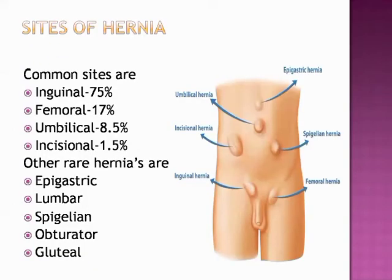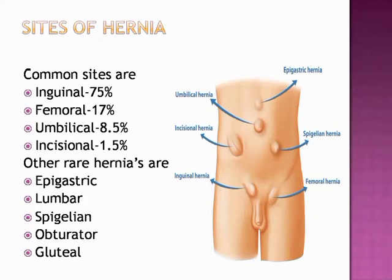The common sites of hernia: inguinal hernia accounts for 75% of all cases, femoral hernia is around 17%, umbilical hernia is around 8.5%, and incisional hernia accounts for 1.5% of total cases. Incisional hernia occurs at the incision site of a prior surgery. Rare types — epigastric, lumbar, spigelian, obturator, and gluteal hernias — together account for 1.5% of all hernias. The most common site is the inguinal canal.